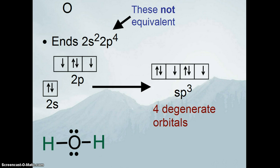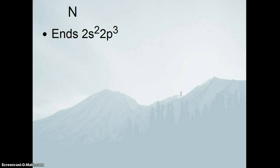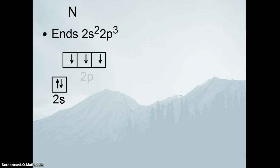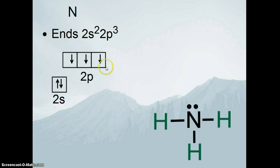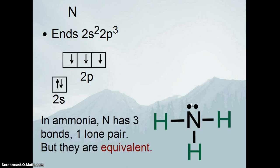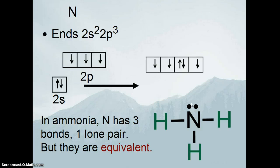Oxygen having two bonds and two lone pairs is an sp³ orbital set. We have four degenerate orbitals; it just happens that two of them are full. The electron domain geometry is tetrahedral. Nitrogen is more of the same. We have three half-filled p orbitals 90 degrees to each other, but in ammonia there are four groups of electrons and the electron domain geometry is tetrahedral. With three bonds and one lone pair, ammonia also has sp³ hybridization.